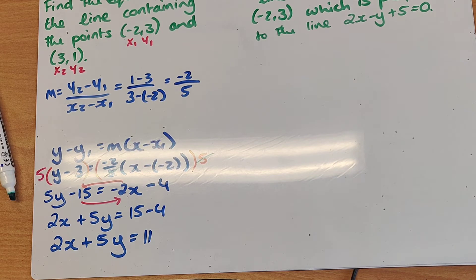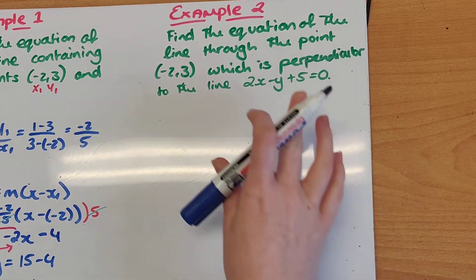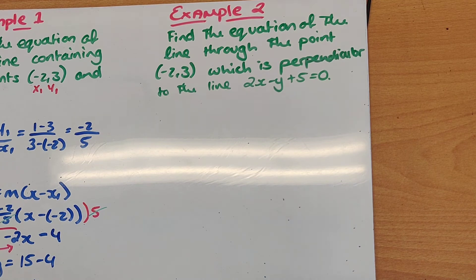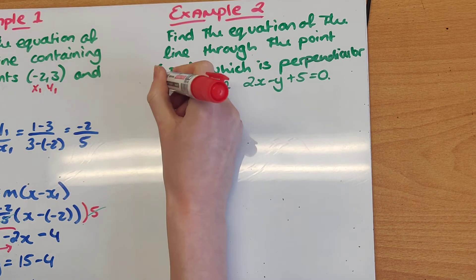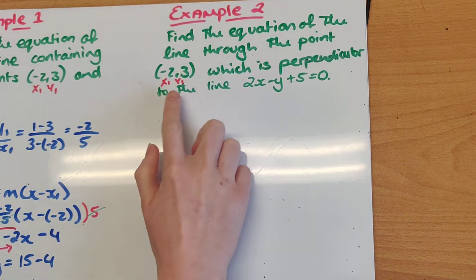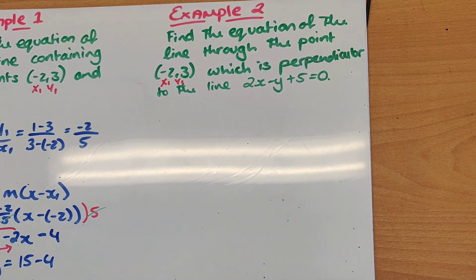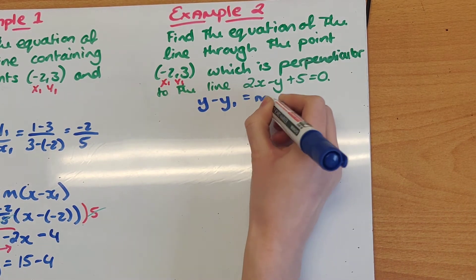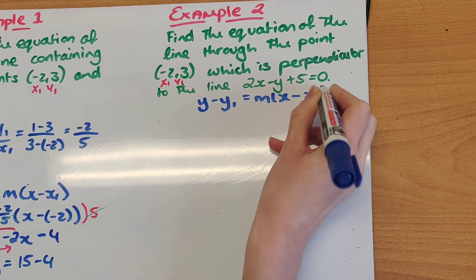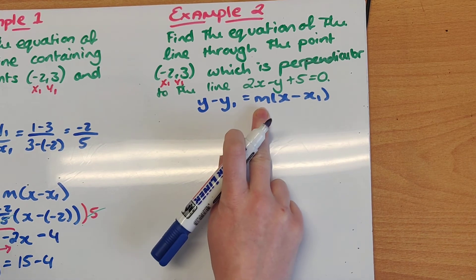Take a second, go back through that, see how we feel, and then we'll move on to Example 2. Example 2 says to find the equation of a line — so again I know I'm going to be using my y minus y1 formula — through the point (−2, 3), which is my x1, y1, which is perpendicular to the line 2x minus y plus 5 equals 0. I have my x1 and y1, but what I'm missing to solve this problem is the slope.